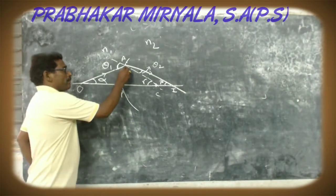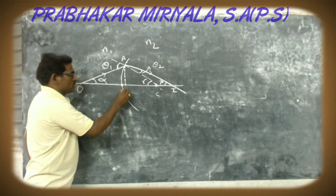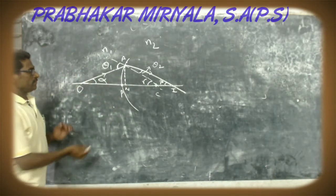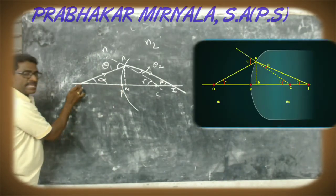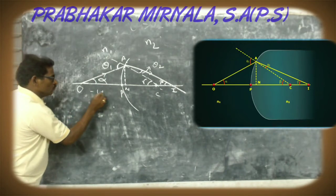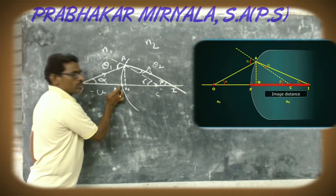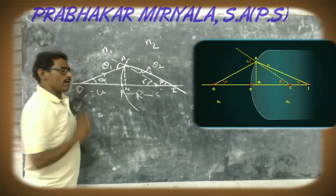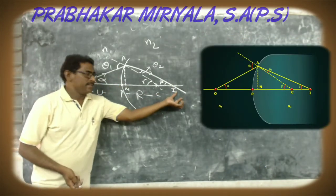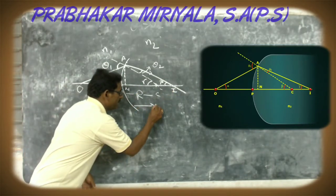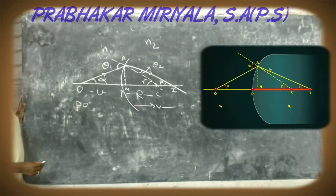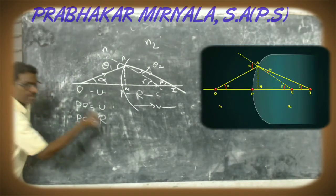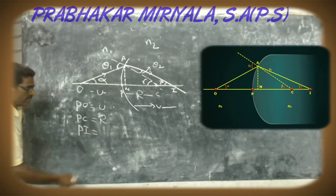Draw a perpendicular line from A to the principal axis, which is AN. AN is the perpendicular to the principal axis. The distance PO is the object distance, considered as U. The distance PC, from the pole to the center of curvature, is the radius of curvature R, so PC equals R. The distance PI is the image distance, considered as V.